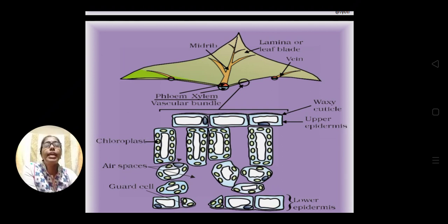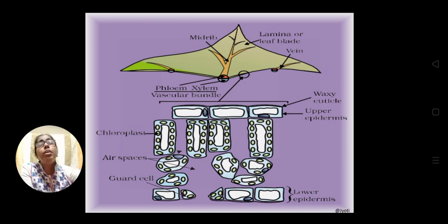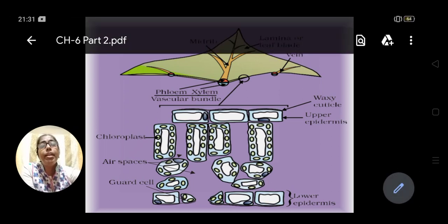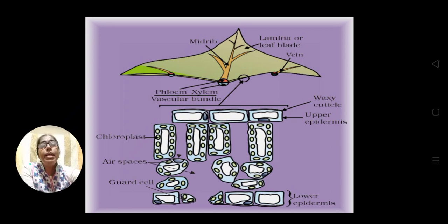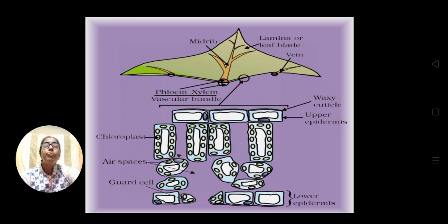Here I am showing the exact site where photosynthesis takes place. This is the cross-section of a leaf. You can see the vein in the leaf — through the vein, water is carried up to the tip of the leaf via the midrib and veinlets, which supply water to the leaf lamina. Water comes from the stem to the leaf through xylem elements present in the midrib. You can see xylem and phloem labeled in the vascular bundle.